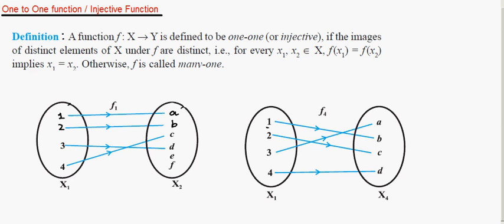The first type is the one-to-one function. The definition is: a function f from X to Y is defined to be one-to-one or injective if the images of distinct elements of X under f are distinct. That is, for every x₁, x₂ belonging to set X, f(x₁) = f(x₂) implies x₁ = x₂.